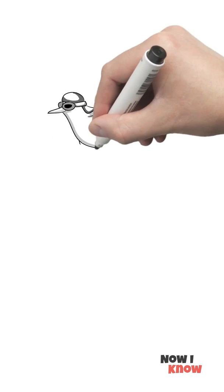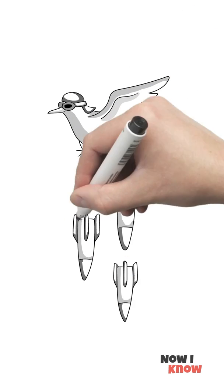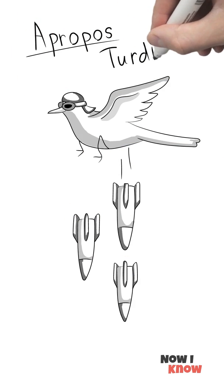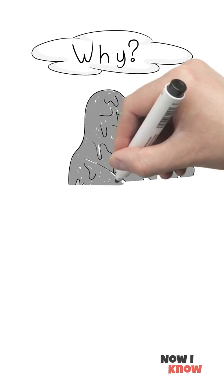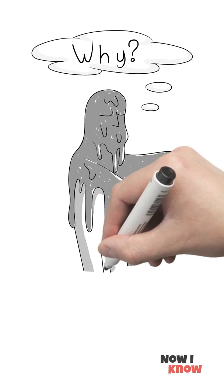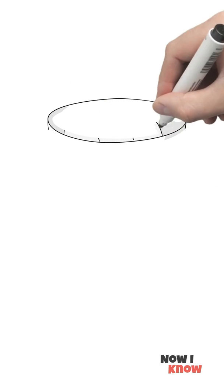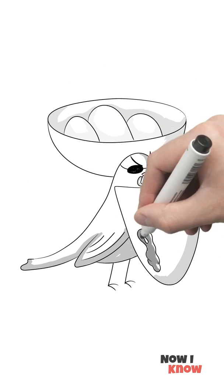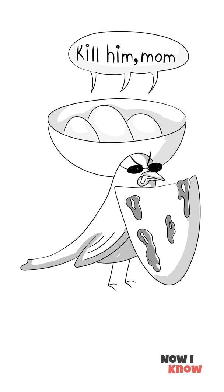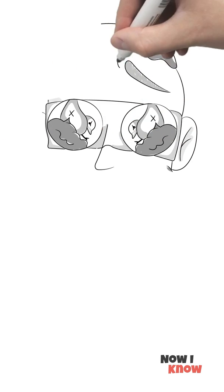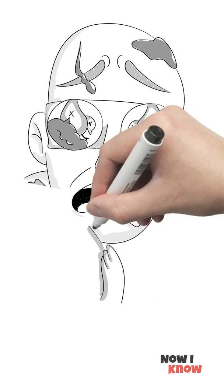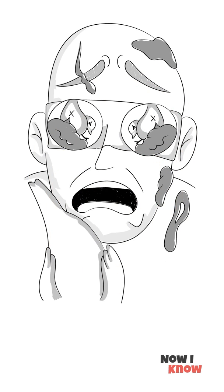The fieldfare bird dive bombs their enemies with poop. The scientific name for this species' family is, apropos, turdidae. You can't make this up. Sometimes their aim is so good, their targets literally get shot down with the poo. They don't do it just for fun. I'm sure some ill-tempered ones do. But this is how they protect their nests. So if you're considering burglarizing a fieldfare, be ready to get bombed with multiple loads of droppings.